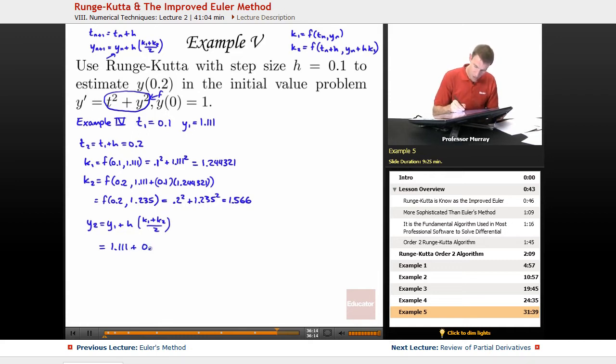My h is still 0.1, and my k1 is 1.244. My k2 is 1.566. Got all those numbers saved in my calculator now.